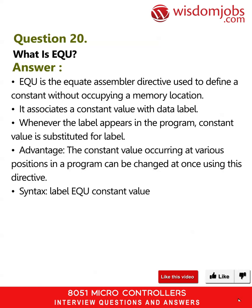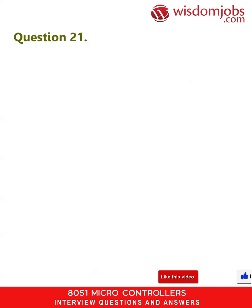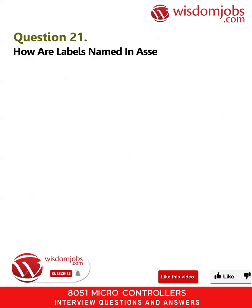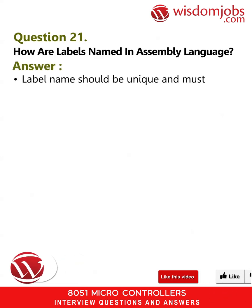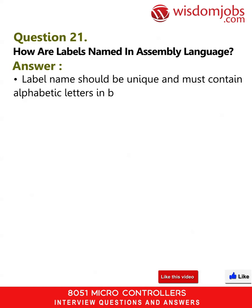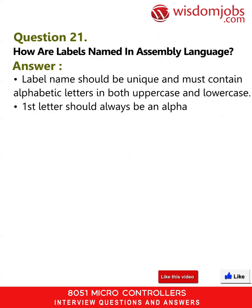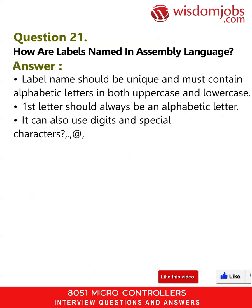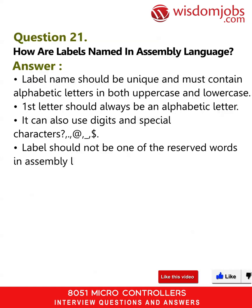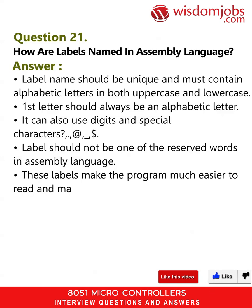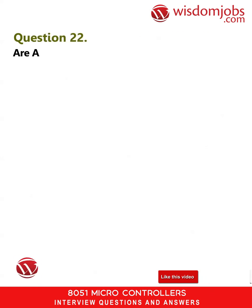Syntax: LABEL EQU constant_value. Question 21: How are labels named in assembly language? Answer: The label name should be unique and must contain alphabetic letters in both uppercase and lowercase. The first letter should always be an alphabetic letter. It can also use digits and special characters such as underscore and dollar sign.